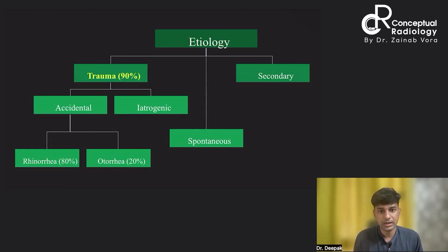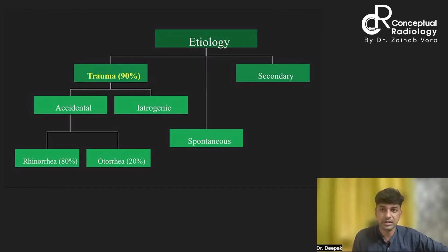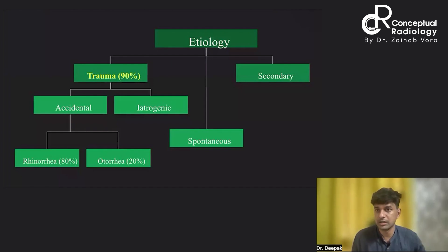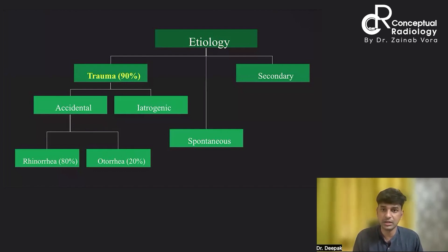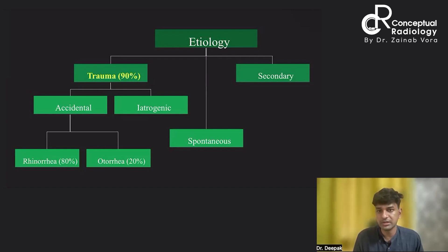Most commonly, patients present with rhinorrhea, which is the manifestation in 80 percent of CSF leak cases. In 20 percent, otorrhea occurs, but it often won't manifest because the tympanic membrane remains intact. Secondary or non-traumatic causes include conditions that increase intracranial pressure, leading to pressure erosion of the calvarial bones and subsequent CSF leak.